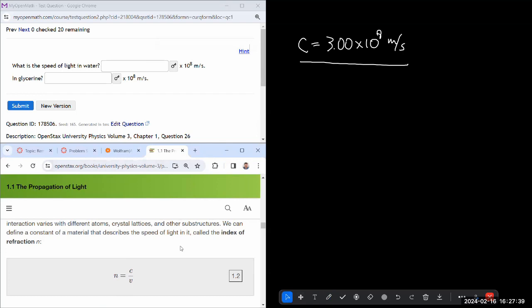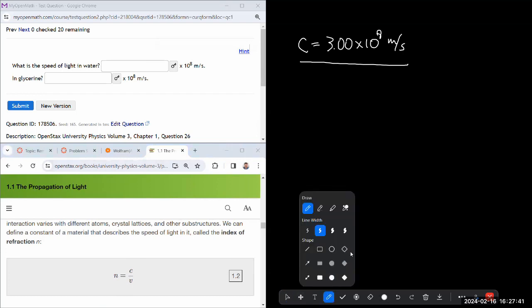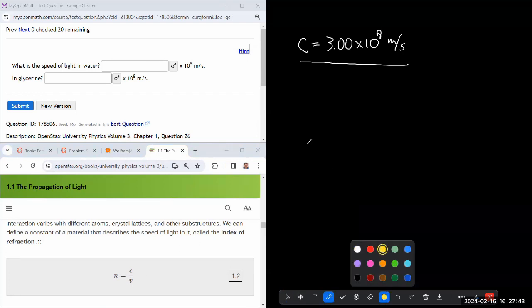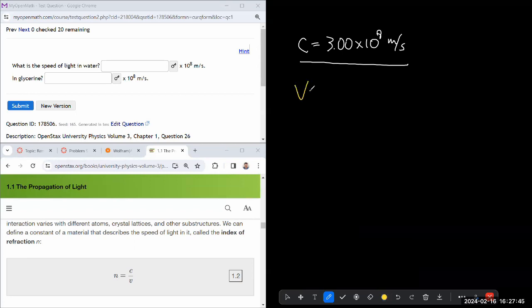So we can turn it around, solve this actually for speed of light in medium, and say speed of light in medium is equal to speed of light in vacuum divided by index of refraction.